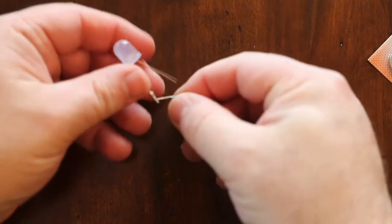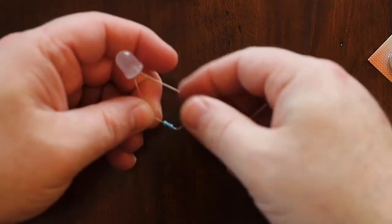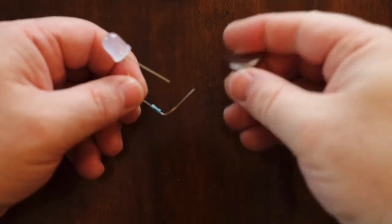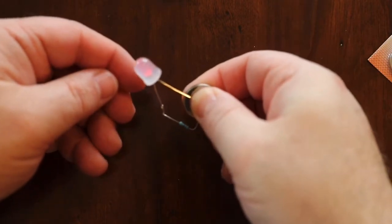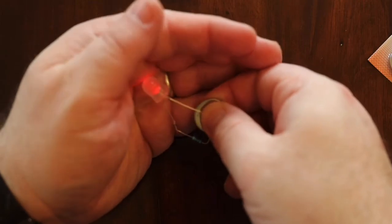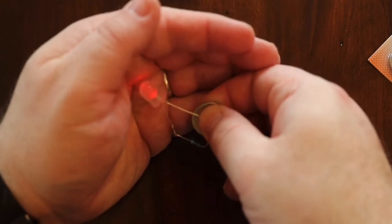And then what you want to do is, this is still the positive leg here, take the battery, touch it to the back side for the resistor and the front side to that positive leg, and you'll notice that the LED is very, very dim.